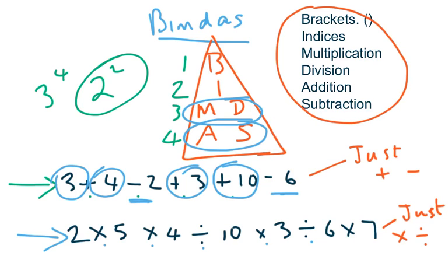So you would go 2 multiplied by 5 is 10, multiplied by 4 is 40, divided by 10, and so on. Look, you'll never get a question like this. The point is just to show to you that all you have to do is start on the left and work to the right.